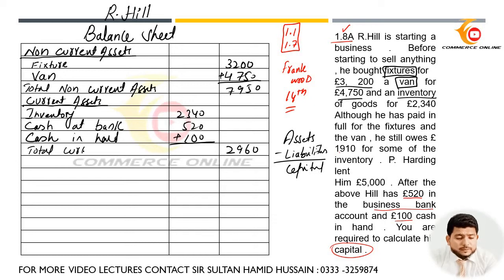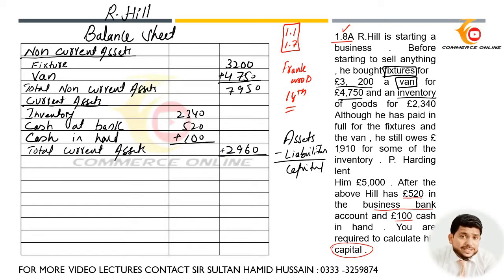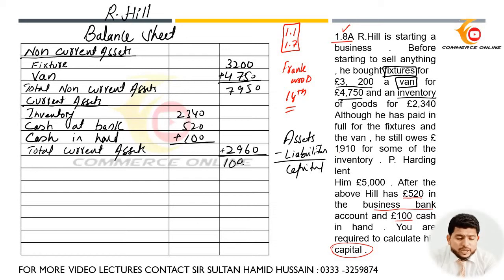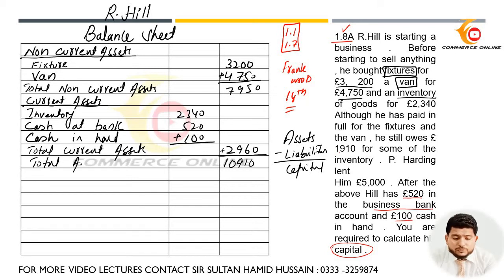I will write total current assets. If I add them all, we get £2,960 as the total current assets. After getting the total current assets, I need to add non-current assets to total current assets. So I will get £10,910, and that is the amount of total assets.